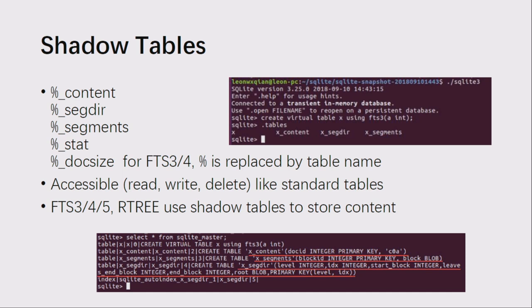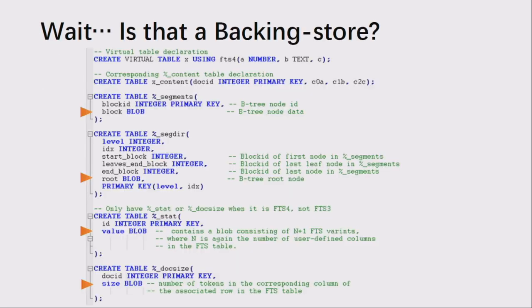The shadow table is used as a container to store the contents of full-text search metadata. Almost every shadow table has a field of type blob, because FTS maintains an inverted index that maps from each unique term or word in the dataset to the locations where it appears within the table contents. Compared to other fields, those blobs may have important influence on FTS queries.